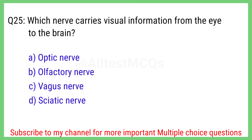Question number 25. Which nerve carries visual information from the eyes to the brain? The right answer is option A. Optic nerve.